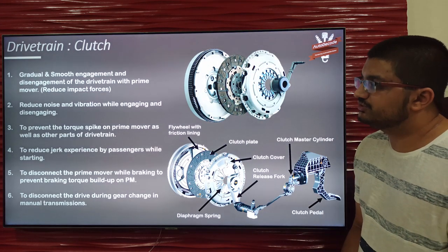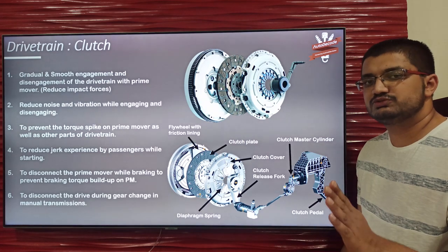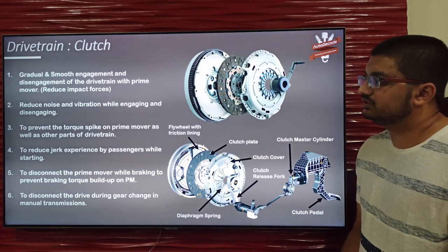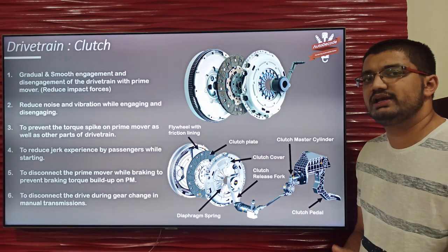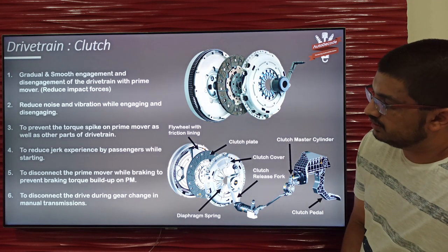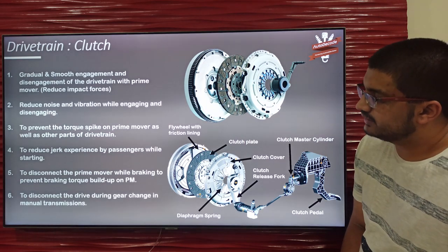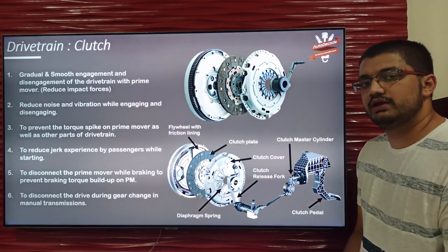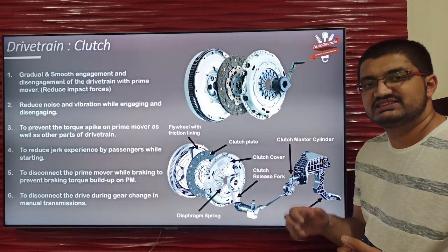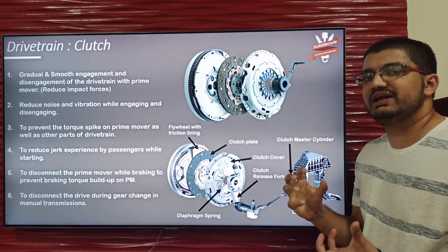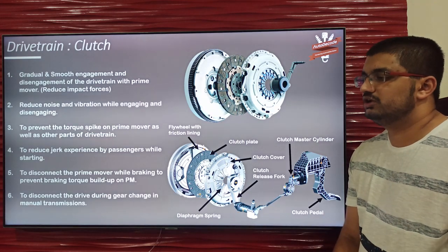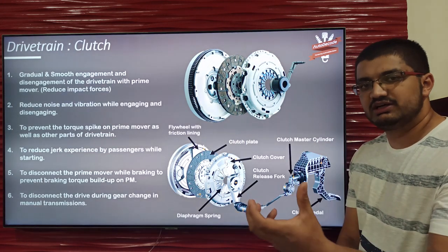The fourth function is reducing jerk. Since engagement and disengagement is smooth and gradual, passengers do not experience any jerk during gear changes. The fifth function is to disconnect the prime mover while braking. If the prime mover is engaged with the drivetrain and we simultaneously apply brakes on the wheels, this braking torque will be built up on the prime mover.